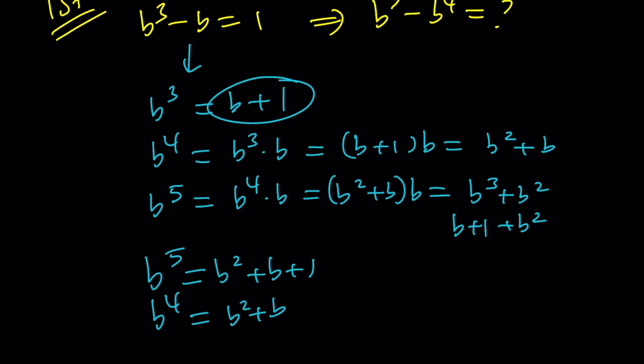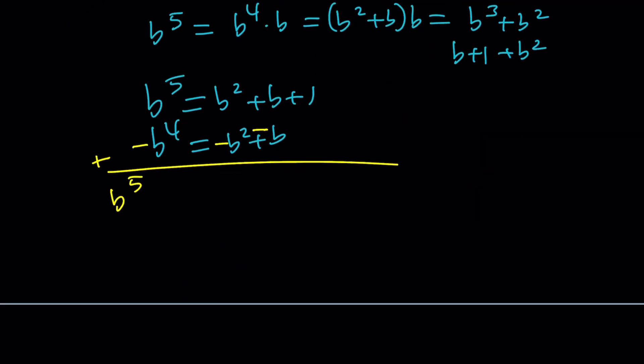Now, you're supposed to subtract them because that's what we're looking for. Negate and add them. b to the fifth minus b to the fourth. b squared cancels out. b cancels out. End up with 1. Yes. Awesome. Amazing, right?